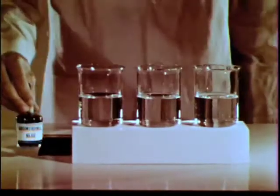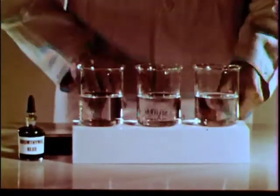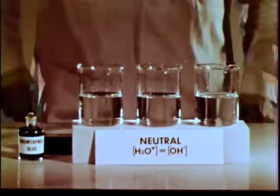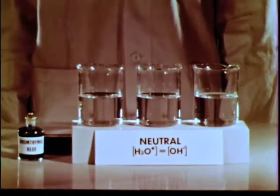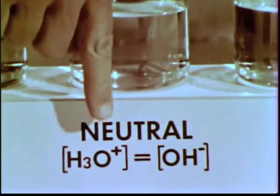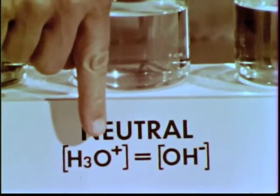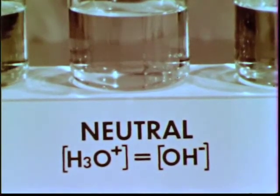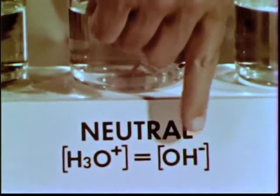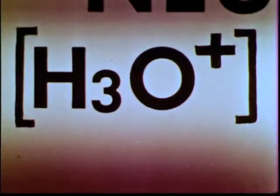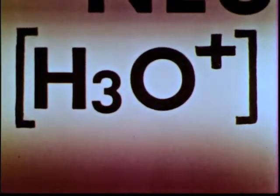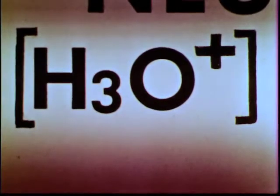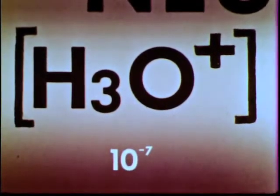Here are three beakers containing pure distilled water. Pure water is said to be neutral. In a neutral solution, the concentration of aqueous hydrogen ions equals the concentration of hydroxide ions. The symbol H₃O⁺ represents aqueous hydrogen ions, also called hydronium ions. Their concentration is 10 to the minus seventh molar at room temperature.